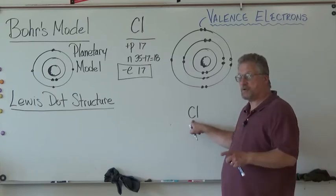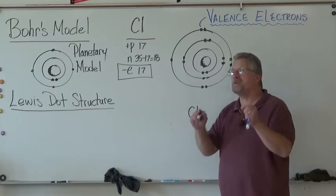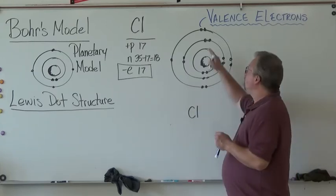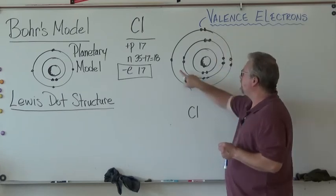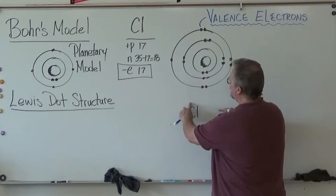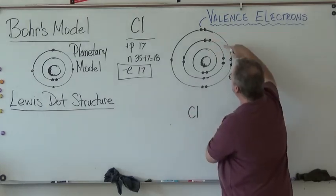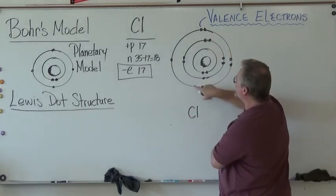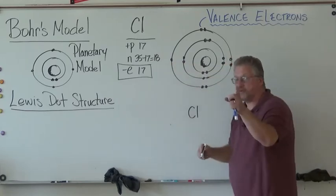The next thing you do is, remember, Lewis only wants to move these valence electrons onto this. So what he does is he goes, you've got one, two, three, four, five, six, seven. So this is what Lewis does.